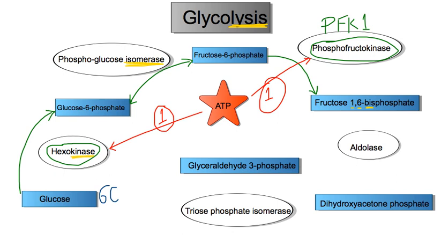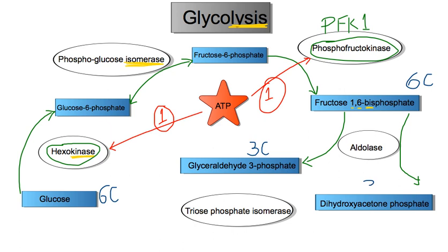Up until this point we still have a six-carbon sugar with two phosphates. However, the next enzyme — aldolase — does something different: it divides that six-carbon sugar into two three-carbon sugars. These are glyceraldehyde-3-phosphate, also known as G3P, and dihydroxyacetone phosphate, known as DHAP.